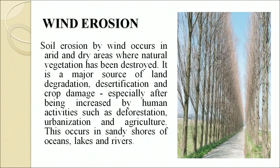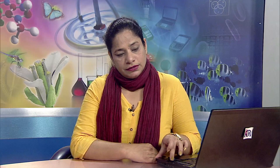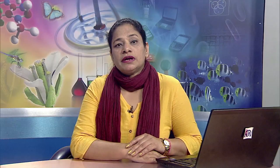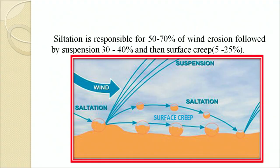Soil erosion by wind occurs in arid and dry areas where natural vegetation has been destroyed. It is a major source of land degradation, desertification and crop damage, especially after being increased by human activities such as deforestation and urbanization. This occurs in sandy shores of oceans, lakes and rivers. The loose particles are blown and transported by wind in three ways: saltation, where particles are lifted a short height into the air and bounce across the soil surface; suspension, transported over long distances as suspended particles; and surface creep, transported at ground level by high velocity wind. Saltation is responsible for 50 to 70 percent of wind erosion, followed by suspension at 30 to 40 percent and surface creep at 5 to 25 percent.